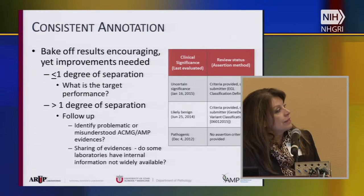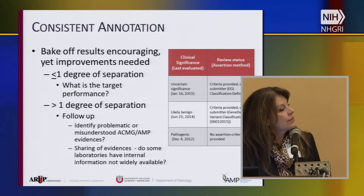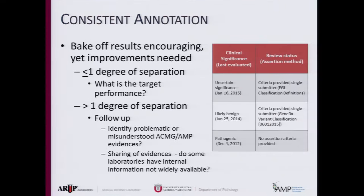Here is just something from ClinVar — an uncertain, a likely benign, and a pathogenic. This was fairly older, and I'll tell you this is actually ARUP. We submitted that a number of years ago and we need to be updating it. However, it's difficult to keep the resources to continually update it. So it's not only about adding information, but also a continual updating with new information.